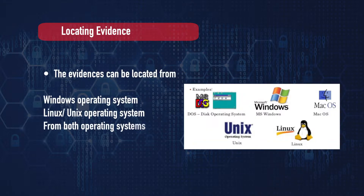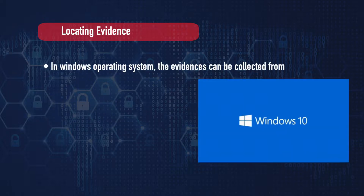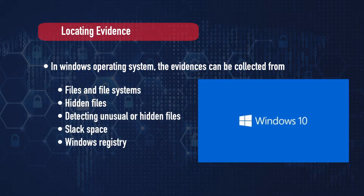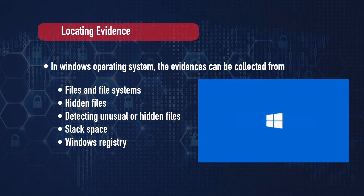The evidence can be located from a Windows operating system, Linux or Unix operating system, or sometimes even from both. In a Windows operating system, evidence can be collected from files and file systems, hidden files, detecting unusual or hidden files, slack space, and the Windows registry.